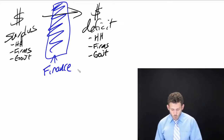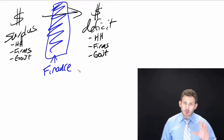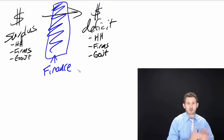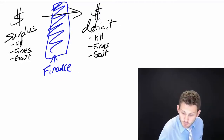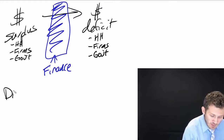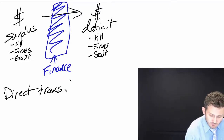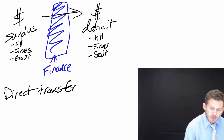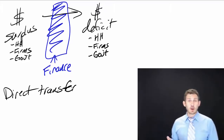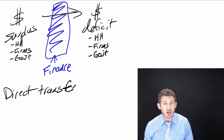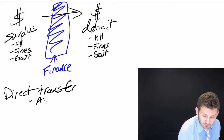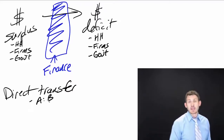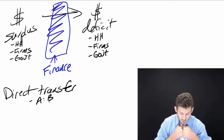There are a couple of different ways that we can get the funds from those that have it to those that need it. The first one we're going to refer to as a direct transfer. A direct transfer is you just loan money to me, I buy your company, whatever it is. This is A walks into the market, meets B, and then they do a transfer.